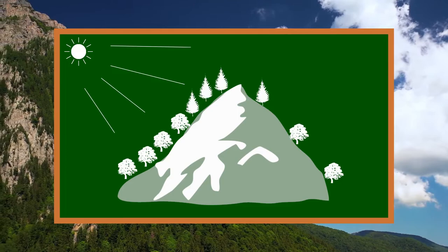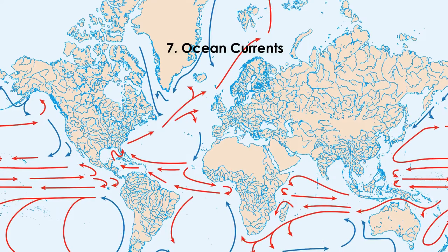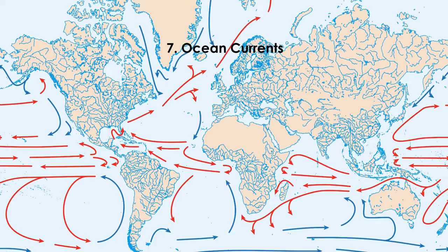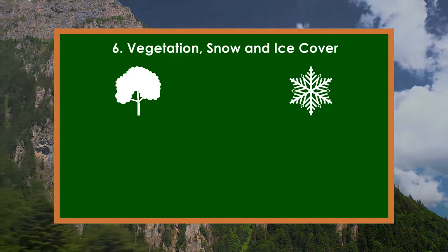Depending on their temperature, ocean currents can have a significant effect on the climate of an area. For example, cold ocean currents result in frequent fogs. Vegetation, snow, and ice cover also have certain effects on the climate.